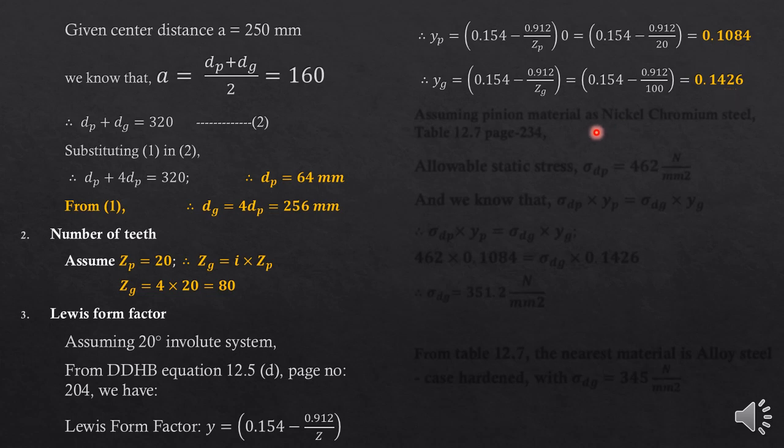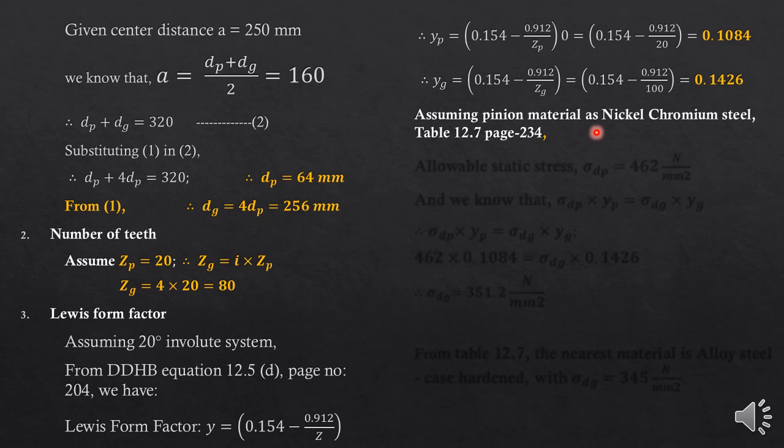We need to identify the weakest member, but since we don't know the material, we don't know what allowable static stress to use. So we make the next assumption: the pinion material is nickel-chromium steel. From table 12.7 on page 234, for nickel-chromium steel the allowable static stress is 462 N/mm².